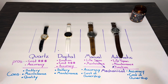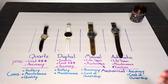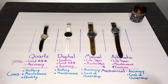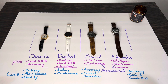This is a question I get very frequently on this channel and in person. A lot of new collectors do not know what quartz, manual, or automatic even means. By explaining these terms, I'm hoping you'll have a better knowledge and understanding of how each watch functions. I'll also cover pros and cons to help you make a better decision in your watch collecting journey.